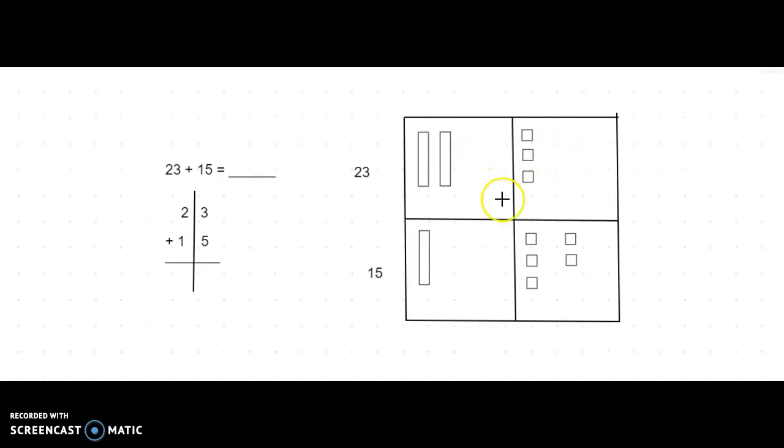I have 23 on the top and 15 on the bottom. So for 23 I've drawn two tens and three ones, and all my lovely mathematicians should recognize these place value drawings. So when we're adding and subtracting our two digit numbers, we're using our place value drawings, our tens and our ones. So I have two tens and three ones for 23. I have one ten and five ones for 15.